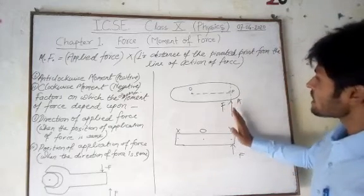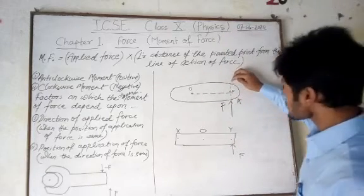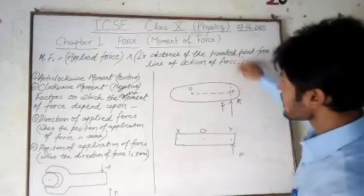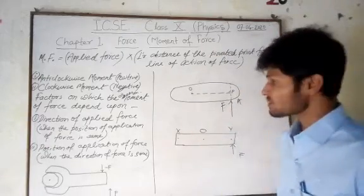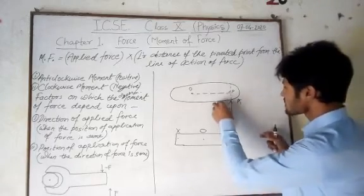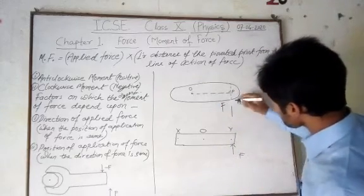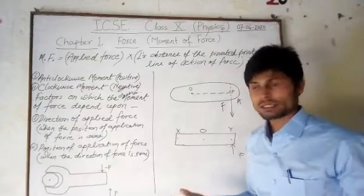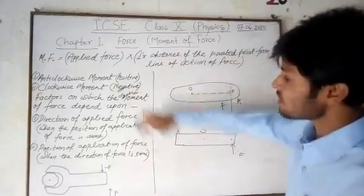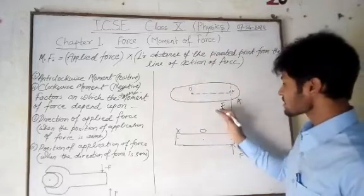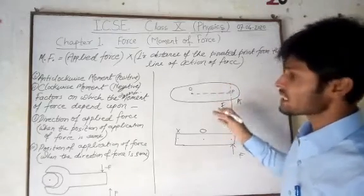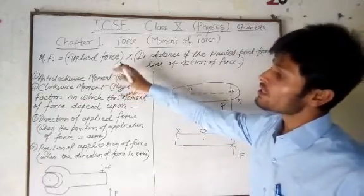If force is applied vertically upward, the body will rotate about the axis at O in an anti-clockwise direction. Now suppose at the same point A, we change the direction of the force to vertically downward; the body will rotate about the axis of O in a clockwise direction. By changing the direction of the force, we can change the anti-clockwise movement to clockwise movement.